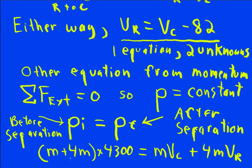So we write the initial momentum. We have both objects, a total mass of 5m times their combined velocity, 4,300 kilometers per hour. And then after the separation, the capsule's on its own, its mass times its unknown velocity, and the mass of the rocket times its unknown velocity.